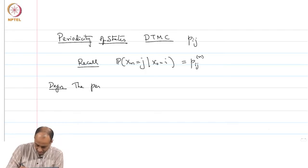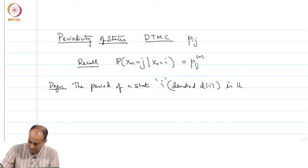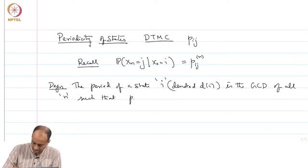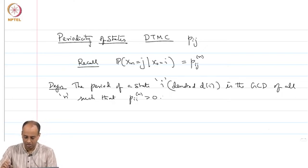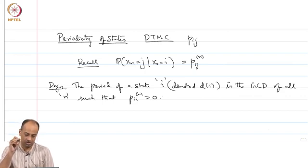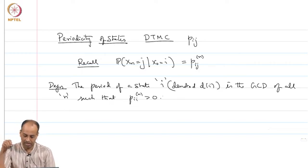The period of state i, denoted D(i), is the GCD — greatest common divisor — of all n such that P_ii^n is greater than 0. So you are looking at going from state i back to state i in some n steps. You look at all those n's for which P_ii^n, the n-step transition probability, is positive. You take the GCD of all those n's, and that is called the period of state i.